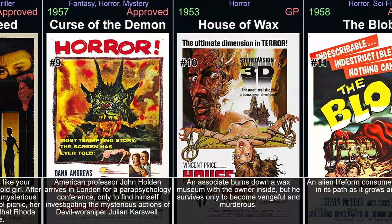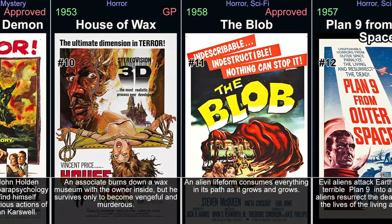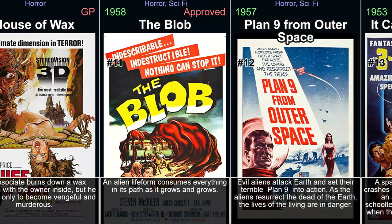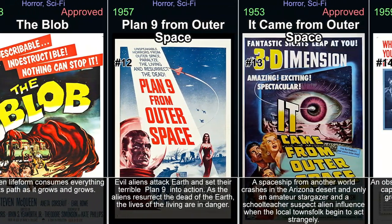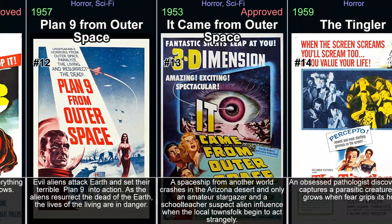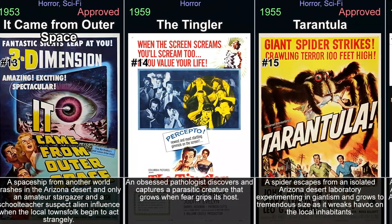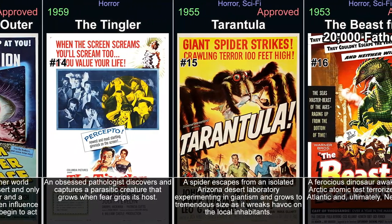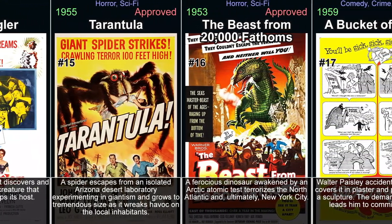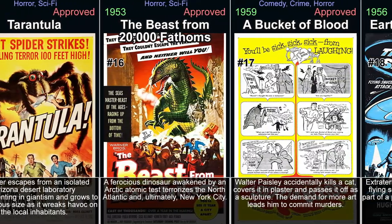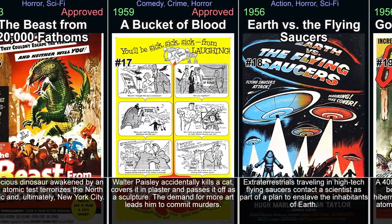Invasion of the Body Snatchers, 1956. Invasion of the Body Snatchers is a classic horror movie directed by Don Siegel and released in 1956. The film revolves around a small town where alien pods are replacing humans with emotionless duplicates while they sleep. As chaos ensues, several characters desperately try to escape the clutches of these invasive beings and restore humanity.